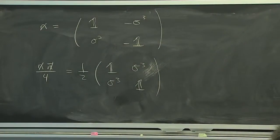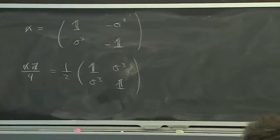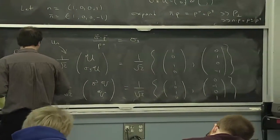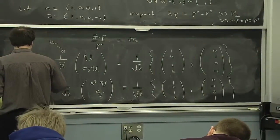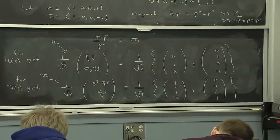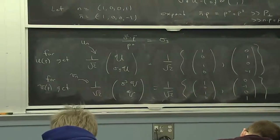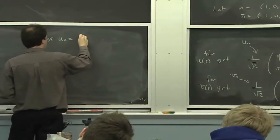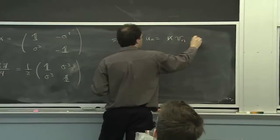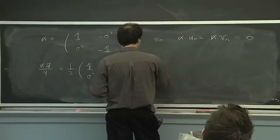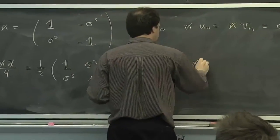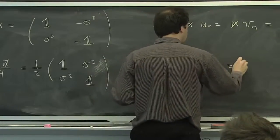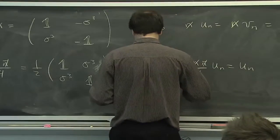And these spinors here, which I need a name for, so let's call this un and call this vn, they satisfy n slash vn is 0, and they also satisfy n slash n bar slash un is un for both of them.